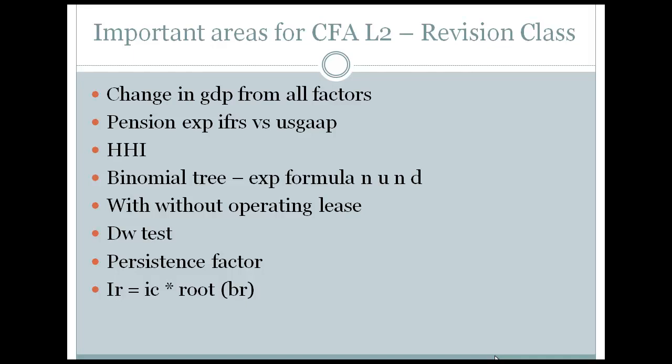In the economics section, you can get a question where growth rate of output is asked. Growth rate of output is rate of technological change plus alpha times growth rate of capital plus (1 minus alpha) times growth rate of labor. Now (1 minus alpha), which is multiplied into growth rate of labor, is labor cost upon total factor cost, which is given to us. From that we can calculate alpha.